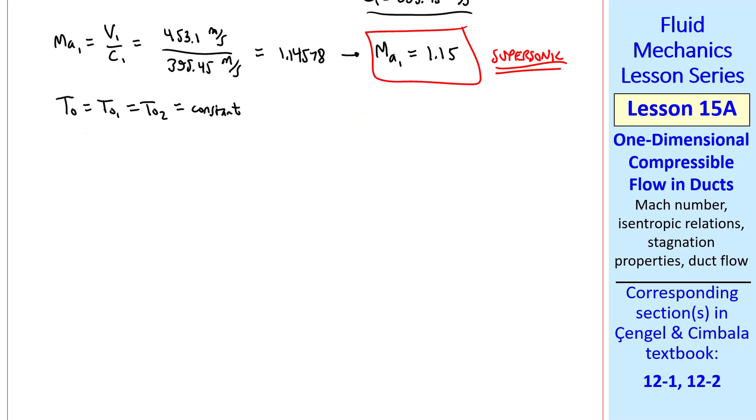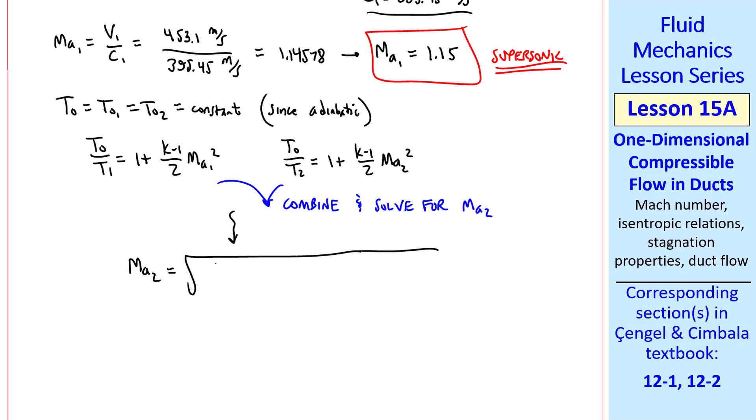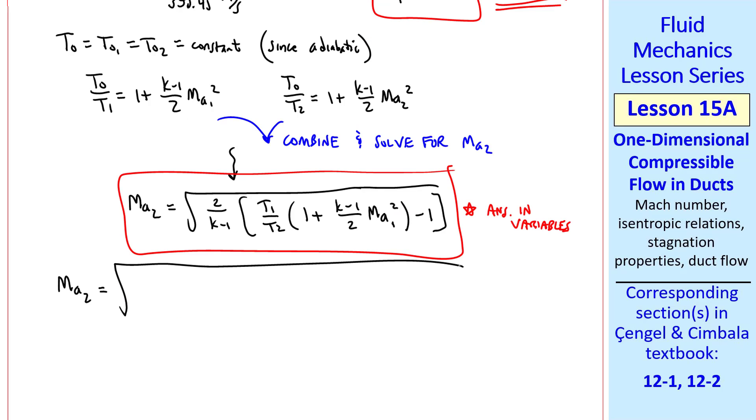We know for this flow T0 is a constant since there's no heat transfer. So we can write our expression for stagnation temperature in terms of T1 and Ma1, and in terms of T2 and Ma2. We combine these two equations and solve for Ma2, since T0 is the same in both equations. Leaving out the algebra, I get Ma2 is the square root of 2/(k-1) times the quantity T1/T2 times [1 + (k-1)/2 Ma1 squared] minus 1. This is our answer in variables.